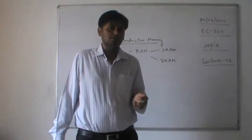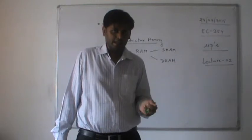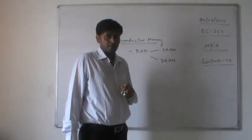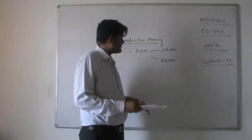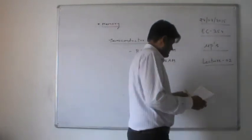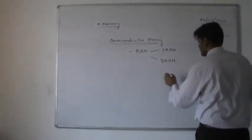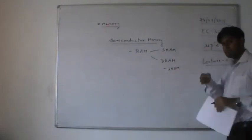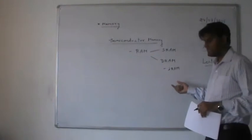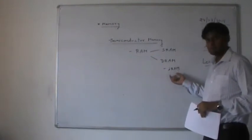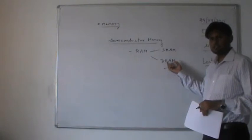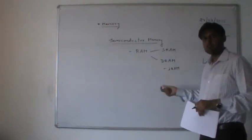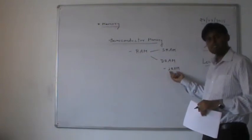If you need larger memory capacity you use DRAM; for smaller, faster memory you use SRAM. DRAM itself has several types. The first is IRAM — integrated RAM — where the refresh and control circuitry required for the DRAM is integrated into a single chip, which is why it is called integrated RAM.